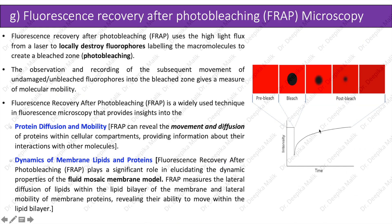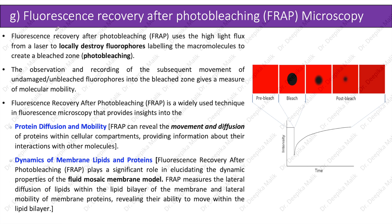Fluorescence Recovery After Photobleaching, or FRAP Microscopy, uses a high-flux laser to locally destroy fluorophores labeling a macromolecule, creating a bleached zone known as photobleaching. The observation and recording of the subsequent movement of unbleached fluorophores into the bleached zone gives a measure of molecular mobility. In the diagram, the pre-bleached area shows the fluorophore giving a complete signal.